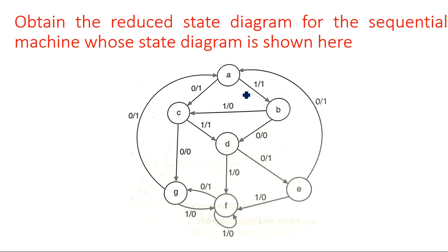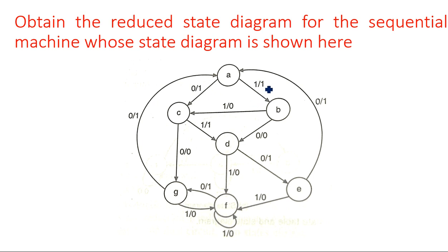One state diagram is given with a total of 7 states. But after reduction, these 7 states may not all remain — it may be reduced to 6 or 5, depending upon the number of reductions.